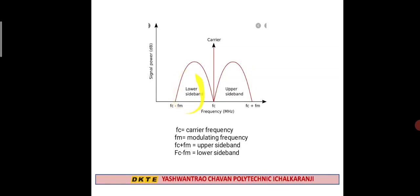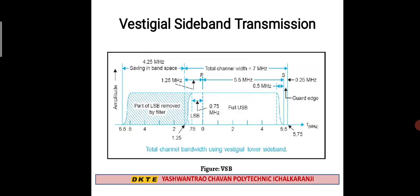When we suppress the lower sideband completely, phase distortion occurs and it becomes visible to the human eye. To avoid this, we do not suppress the entire lower sideband. Instead, only a part of the lower sideband is suppressed, and a small portion is kept as it is. This is the principle behind vestigial sideband transmission.